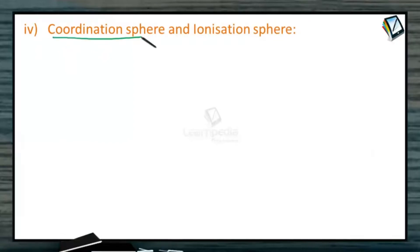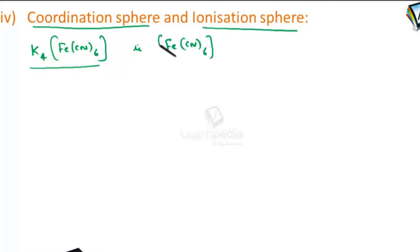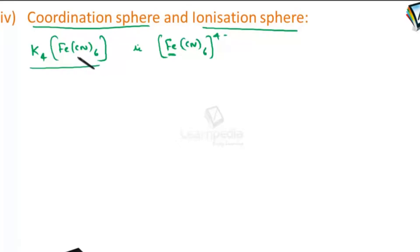The next term we come across is coordination sphere or ionization sphere. Consider K₄[Fe(CN)₆] — the part placed in square brackets, that is [Fe(CN)₆]⁴⁻, is the coordination sphere. That is, the central metal atom to which the ligands are attached forms the coordination sphere. The potassium outside the square bracket, which comes out in the form of ions as 4K⁺ when put in water, is the ionization sphere.